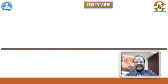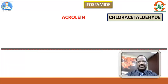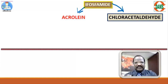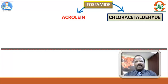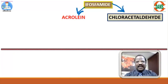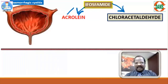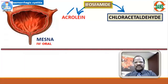Ifosfamide is an analog of cyclophosphamide. This drug also produces two important metabolites — acrolein and chloroacetaldehyde — but these metabolites are more slowly formed and accumulate in the body for a longer period. Therefore, ifosfamide causes more problems than cyclophosphamide. Since it causes accumulation of acrolein, it causes hemorrhagic cystitis, and the same antidote mesna is used.